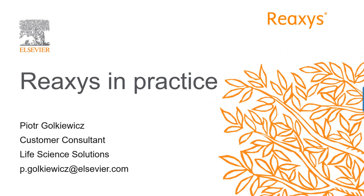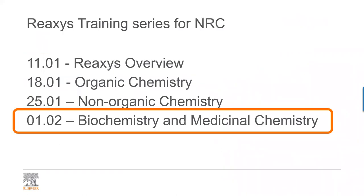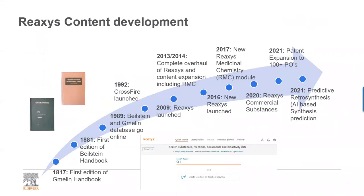Reaxys is a database based on Gmelin, which was the book of inorganic chemistry, and Beilstein, which was the book of organic chemistry — both from the 19th century. Reaxys was launched in 2009 and relaunched in 2016. As you know it today, it was relaunched in 2016.